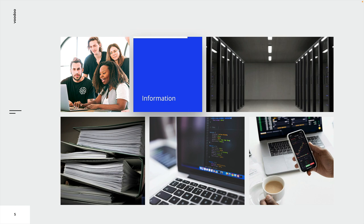Information can be transmitted by various means, including courier, electronic, or verbal communication. Whatever form information takes or the means by which it is transmitted, it always needs appropriate protection. In many organizations, information is dependent on information and communications technology. This technology is often an essential element in the organization and assists in facilitating the creation, processing, storing, transmitting, protection, and destruction of information.